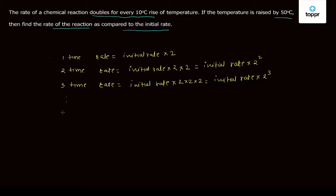So in general, for n time, the rate will be initial rate into two to the power n.